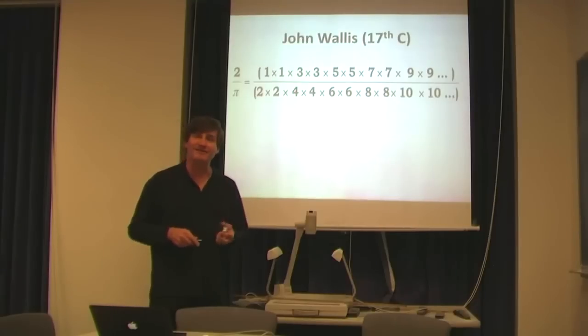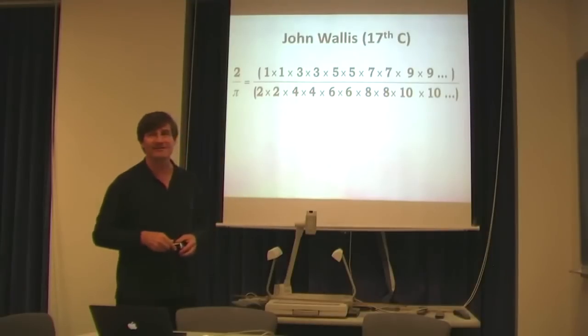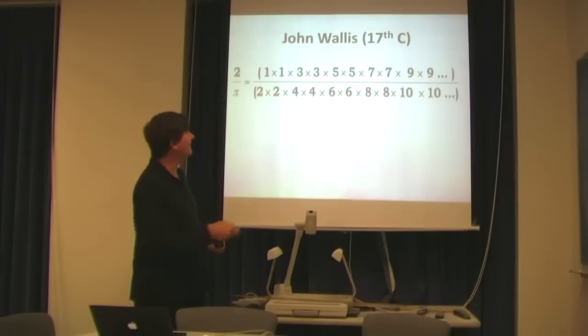During the European Renaissance, some interesting mathematical formulas related to pi appeared. For example, John Wallis in the 17th century showed that the ratio 2/π is actually the product of pairs of odd numbers going out to infinity divided by the product of pairs of even numbers going out to infinity. So 1×1×3×3 and so on, divided by 2×2×4×4 and so on.